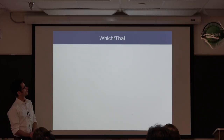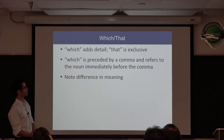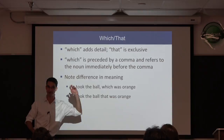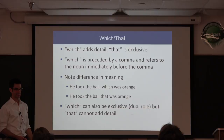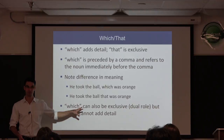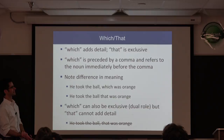Which vs. that — this is quite controversial. 'Which' adds detail, whereas 'that' is exclusive. 'Which' is preceded by a comma and refers to the noun immediately before the comma. Note the difference: 'he took the ball, which was orange' versus 'he took the ball that was orange' — specifically grabbing the orange one. 'Which' can also take the place of 'that,' giving it a dual role. But 'that' cannot be used in place of 'which' following a comma.